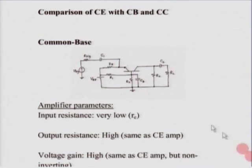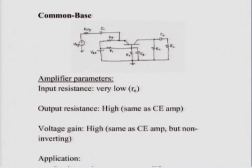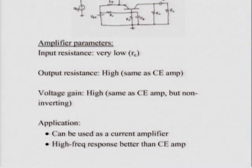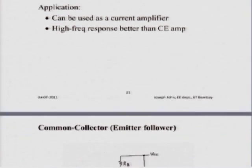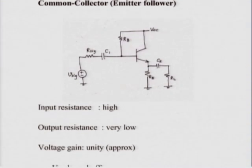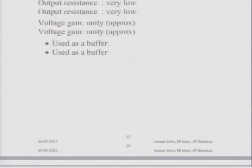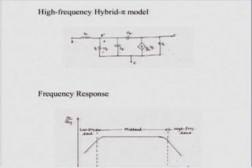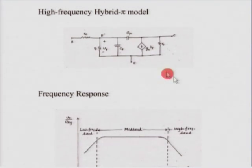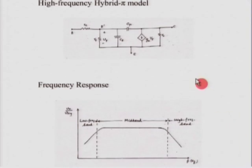Finally, we compared the common emitter with common base and common collector. Common base is a good candidate as a current amplifier with very good high frequency response, but has very low input resistance so it cannot be used as a voltage amplifier. Common collector is a very good choice as a buffer. And the high frequency model showed that common emitter has poor high frequency response due to the Miller effect. This brings us to the close of this lecture. Thank you.